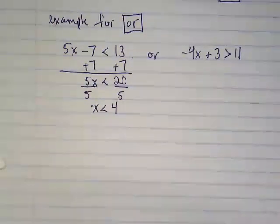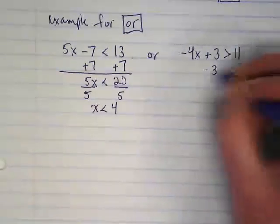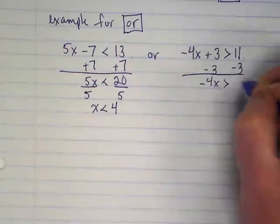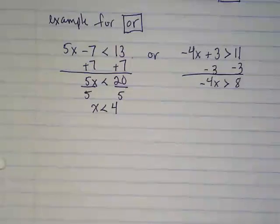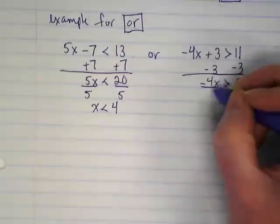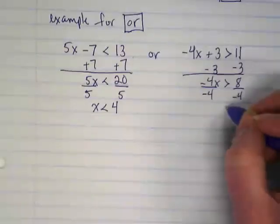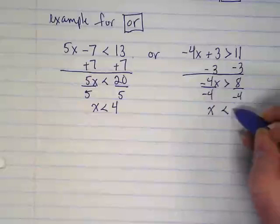So x is less than 4. Now we're going to solve the other inequality. Same steps. What are we dividing by this time? Negative 4. Because we're dividing by negative 4, what's going to happen to our symbol? So I end up with x less than negative 2.